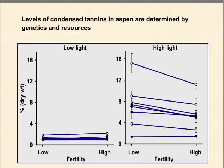This is in contrast to the other major defense compounds, the condensed tannins, where there are strong gene-by-environment interactions — different genotypes express themselves quite differently depending on the environment. Under conditions of low light there's very little production of condensed tannins; that production goes way up for some genotypes but not all under conditions of high light. In general, high soil fertility tends to reduce tannin production.